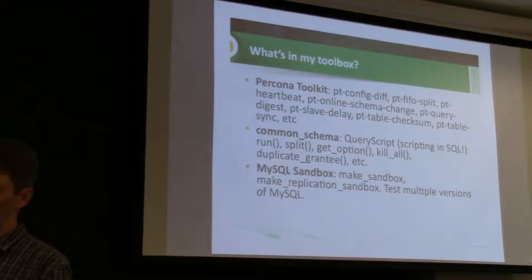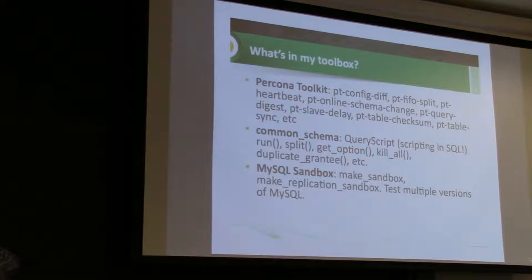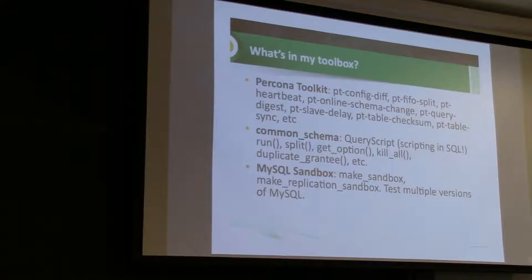Each of these toolkits has multiple pieces. Percona Toolkit has pt-config-diff, which is a really cool tool if you want to compare my.cnf files between two databases. You don't want to just use diff because things might be in a different order but otherwise the same. pt-config-diff lets you throw two config files at it and it'll tell you exactly what the differences are. I use that a lot if I've got two servers exhibiting different symptoms and I want to see if they're configured the same.